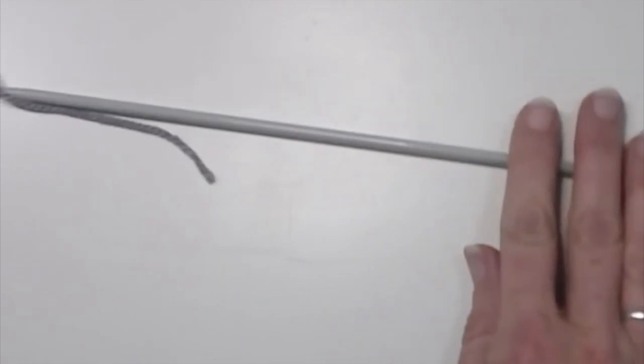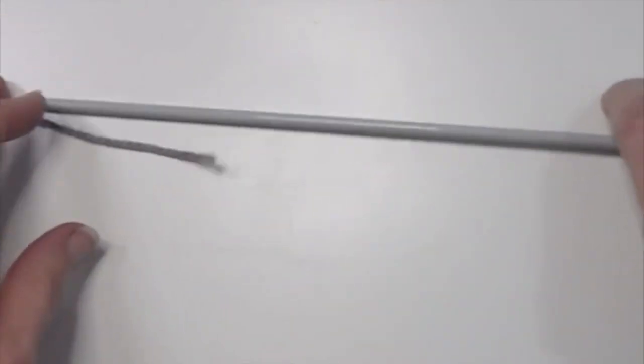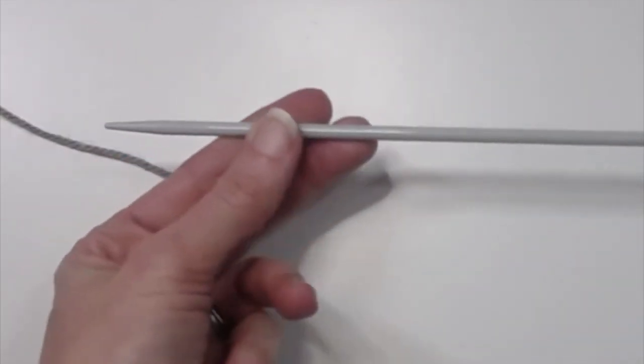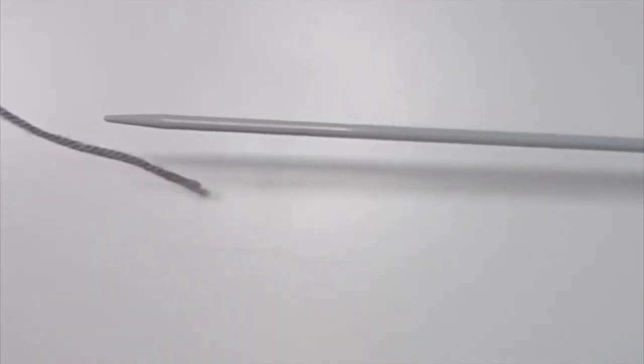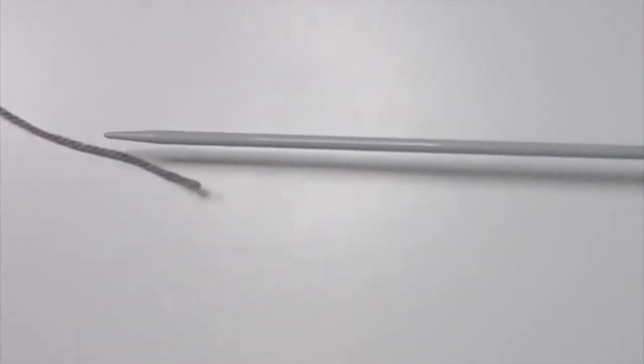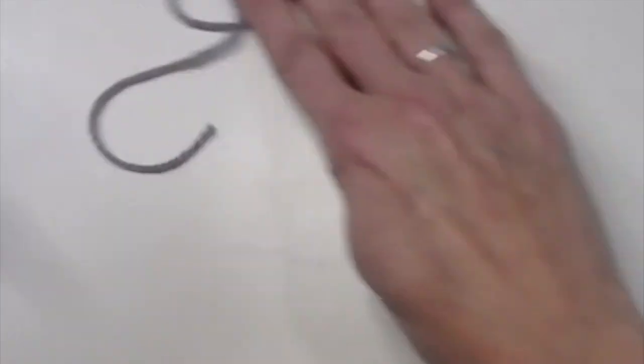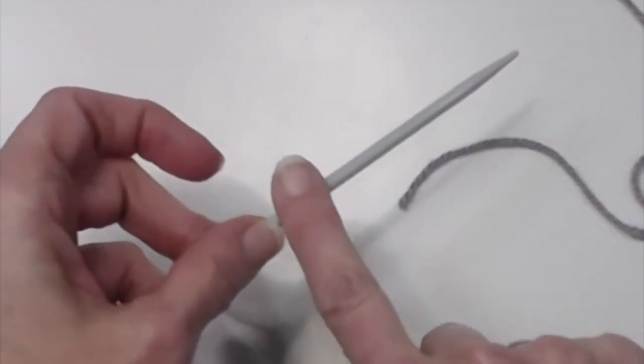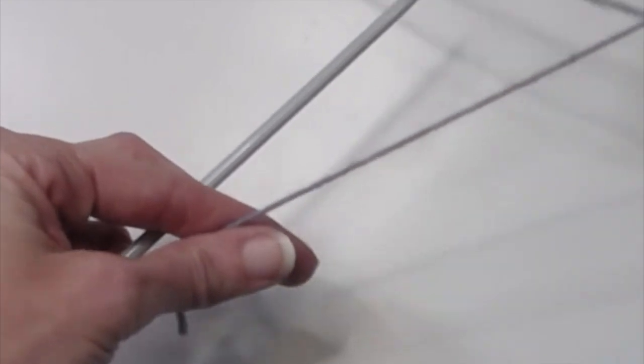Now this is best done with a straight needle, and then when you knit your first row you can go ahead and knit it onto your circular. But because this is going to twist your stitches around, it's best to start with a straight.